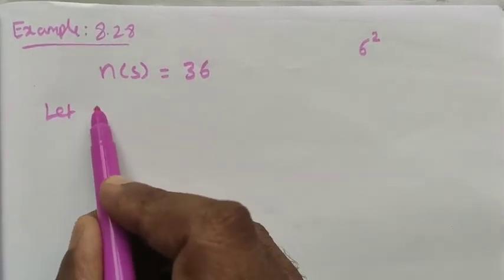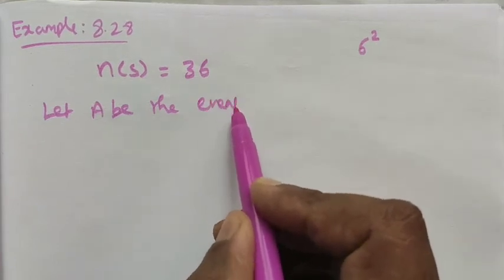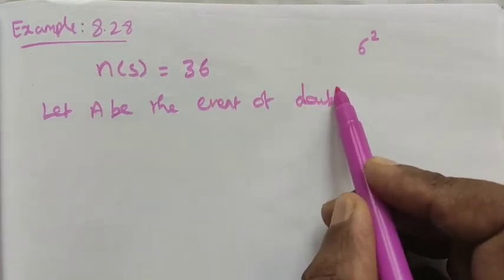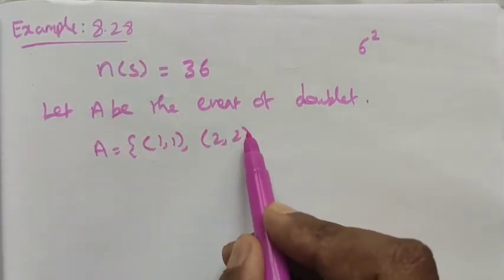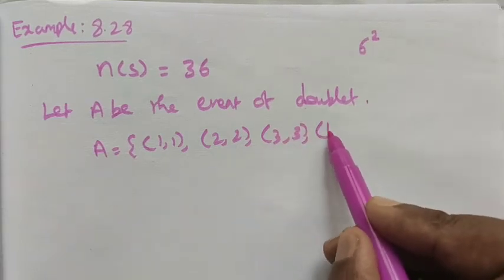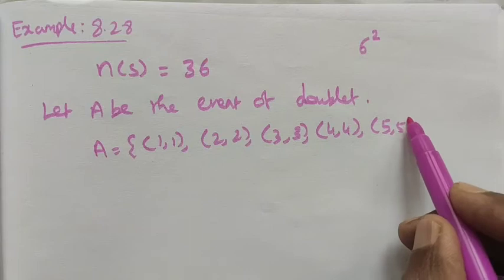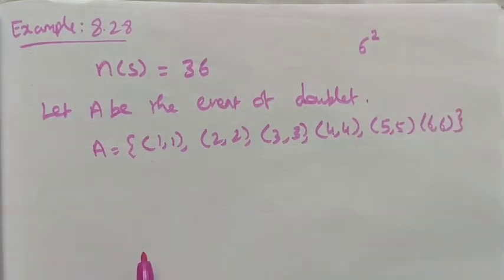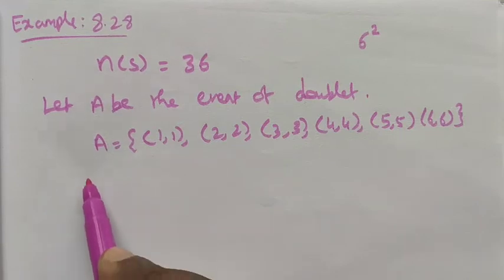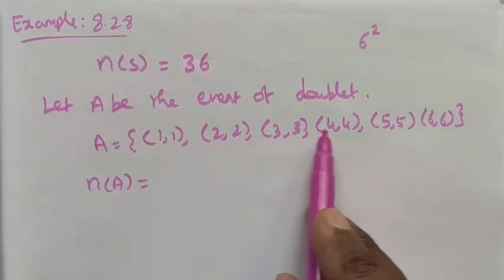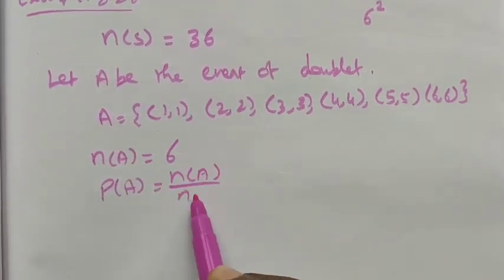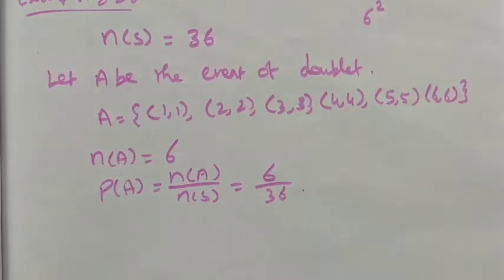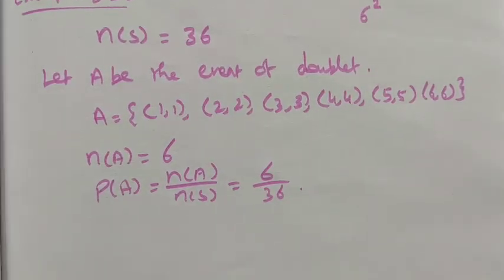Let A be the event of a doublet. Doublet means the number is repeated: (1,1), (2,2), (3,3), (4,4), (5,5), (6,6). These are the doublet outcomes, so n(A) = 6. The probability of a doublet is P(A) = n(A) / n(S) = 6/36.